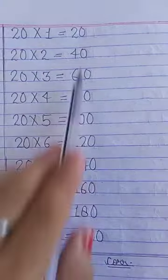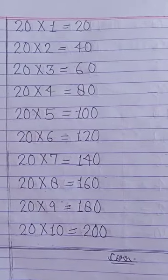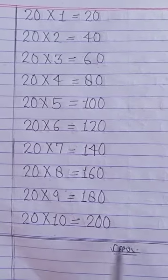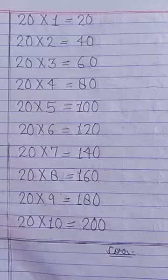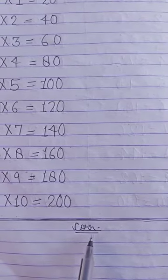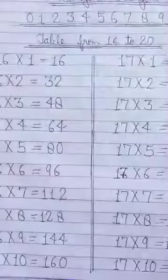Now for table of 20, firstly you draw line, horizontal line with the help of scale, and then write C-O-R-R dot means correction.